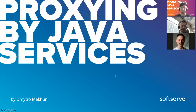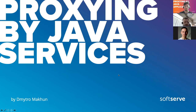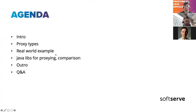Today we're going to talk about proxy in the context of Java services. My name is Dmitry Mohun, I work mainly with Java backend, currently working at Atlassian. That's actually where we encountered the problems I want to describe here. We're going to talk about what proxy is in general, its types, some real-world examples, and then look into Java libraries for proxy and do some comparison.